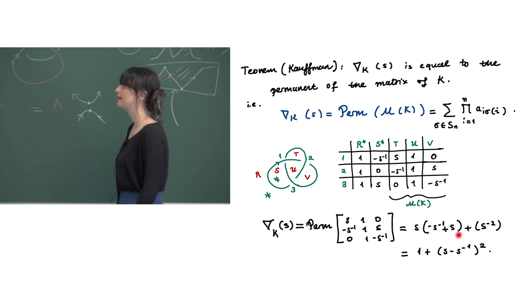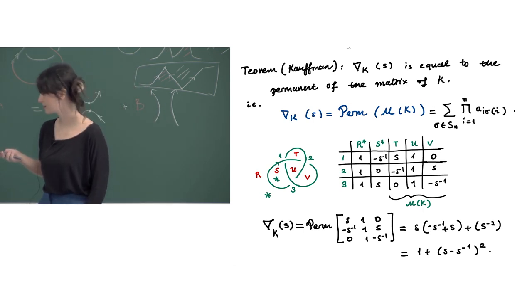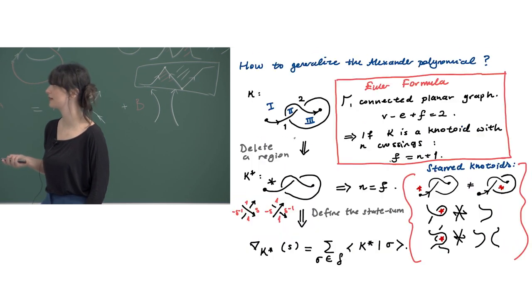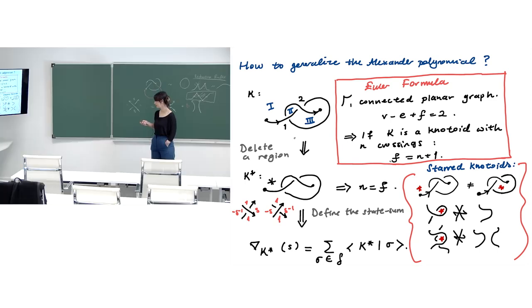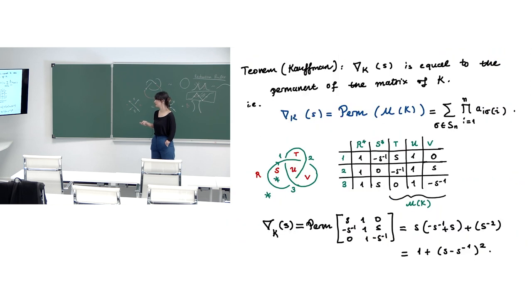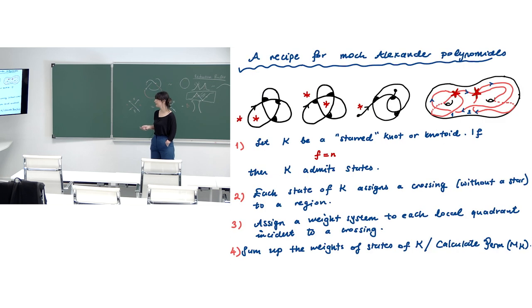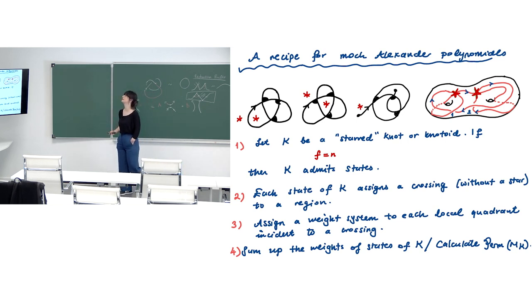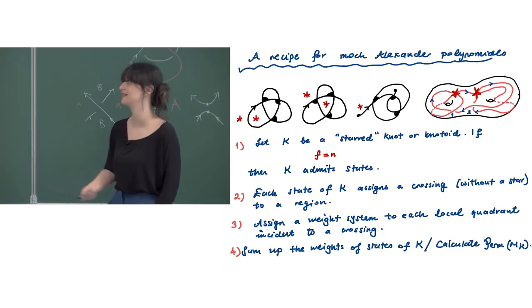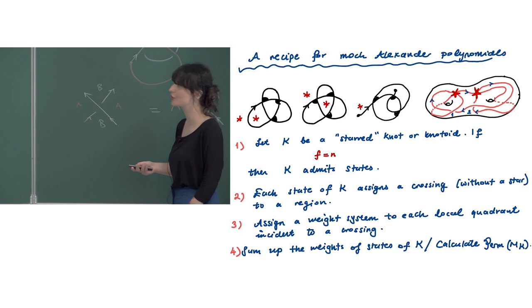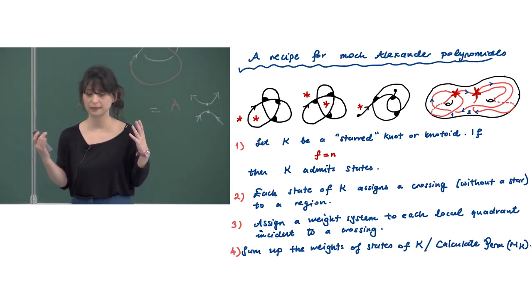Here is a calculation: I obtain this matrix from the trefoil diagram and calculate its permanent, obtaining the Conway-Alexander polynomial of the trefoil, which is 1 + z². So this is nicer — we got rid of the sign calculations and have the permanent of the matrix for the Conway-Alexander polynomial.